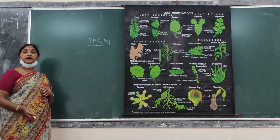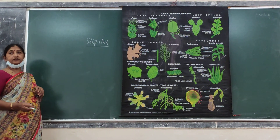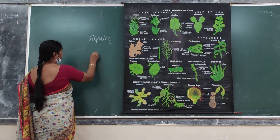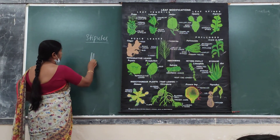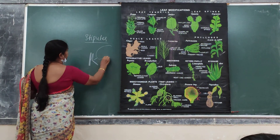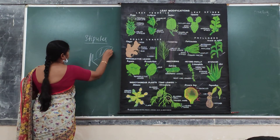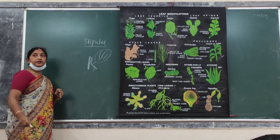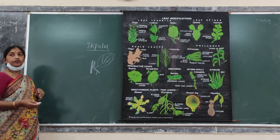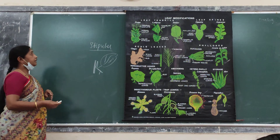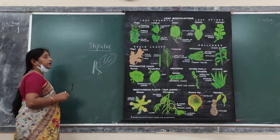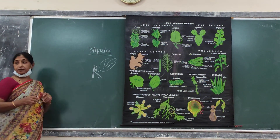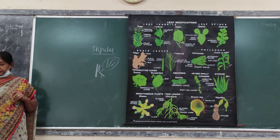Stipules are the lateral appendages present at the base of the leaf. Here the leaves — the stipules — have been modified into different types. In case of this plant, the stipules become large leafy structures.